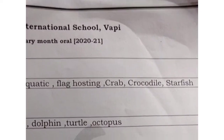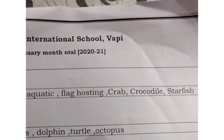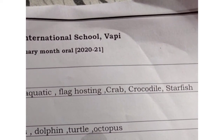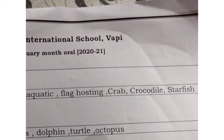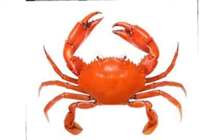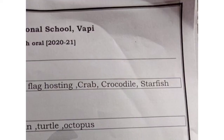Next: Crab. C-R-A-B. Crab is an animal that lives on both land and water. You can see the image of a crab — this is a sea crab.